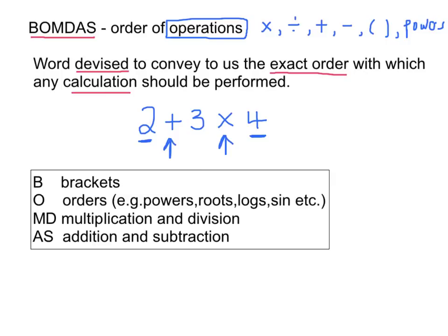BOMDAS answers these questions for us. The B stands for brackets, so brackets will be performed first if they are present. O stands for orders, so if there are powers, roots, log, sine, cosine, etc. present, they will be performed next. MD stands for multiplication and division, and AS will be addition and subtraction, which will be performed last. So that's the order in which calculation will be performed.